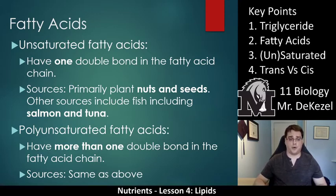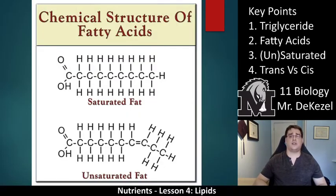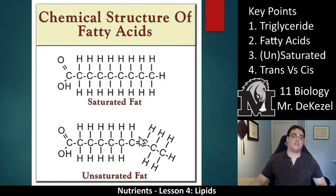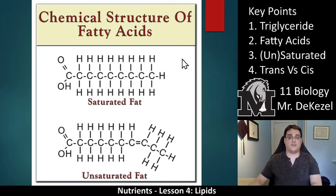Polyunsaturated fats have more than one double bond — the more double bonds, the more unsaturated the fat. The reason we call them unsaturated is that they are not full of hydrogens. Saturated fatty acids have hydrogens off every single carbon with no extra space, while unsaturated fatty acids have a double bond and are missing a few hydrogens. Saturated fatty acids are very bad, and some unsaturated fats can also be bad, as we'll get into.